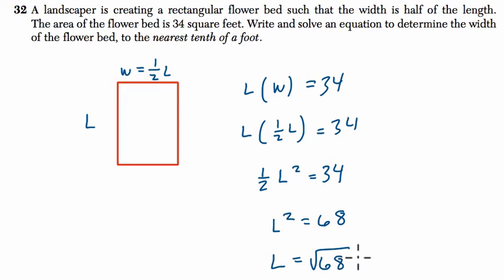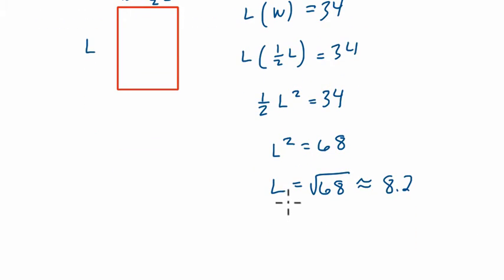Now they want this to the nearest foot. So if we enter this in the calculator, we get about 8.2. Actually, I'll write it the most accurate way I can. We're going to use this decimal. It's the square root of 68.